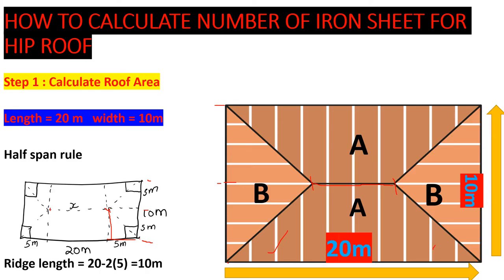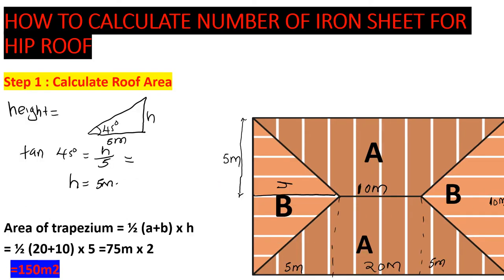Before finding the area, we need the height h of the plan. We have 5 meters as the base and the angle is 90 degrees at the base and 45 degrees at the apex. Using SOHCAHTOA: tan 45 = h over 5. Since tan 45 is 1, our height h is 5 meters.